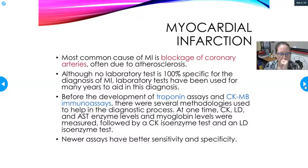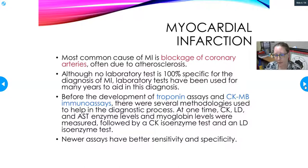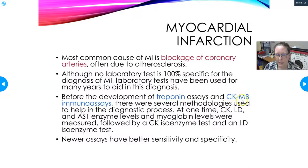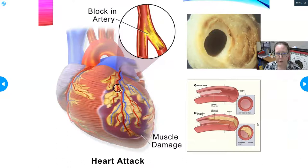Although no lab test is 100% specific for the diagnosis of MI, some have been used for many years. Before troponin became available, physicians used CK, LDH, AST enzyme levels, and myoglobin, followed by CK isoenzyme and LDH isoenzyme tests. This was the old way of doing it, but it has been pretty much completely replaced by troponin and CK-MB immunoassays, which have much better sensitivity and specificity for myocardial infarctions.